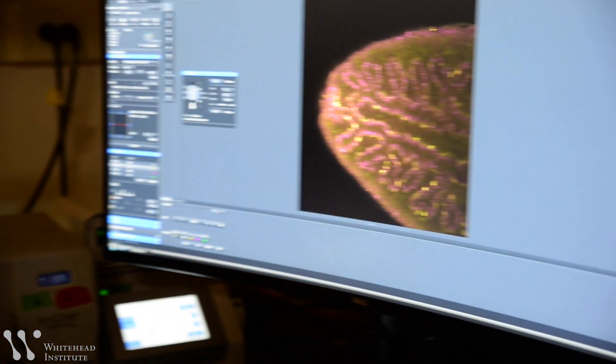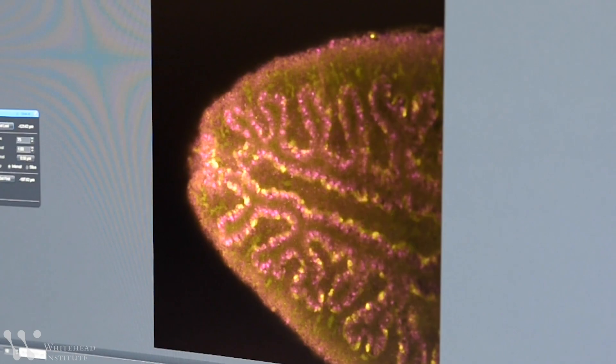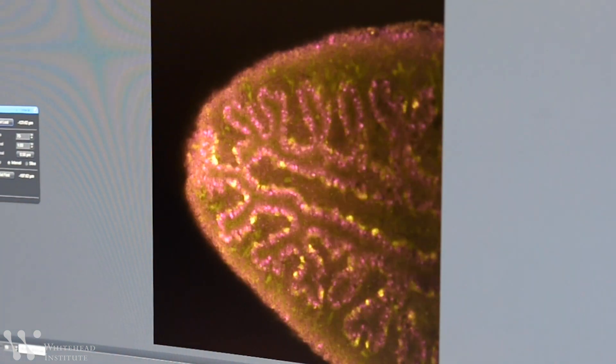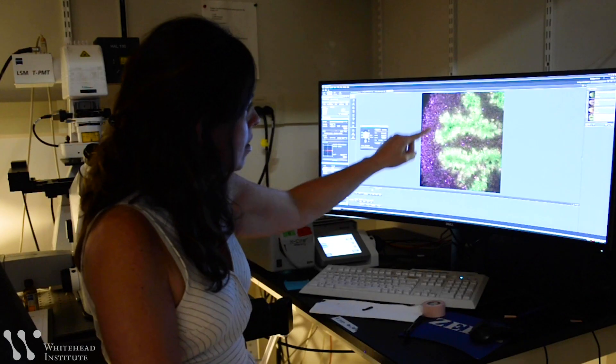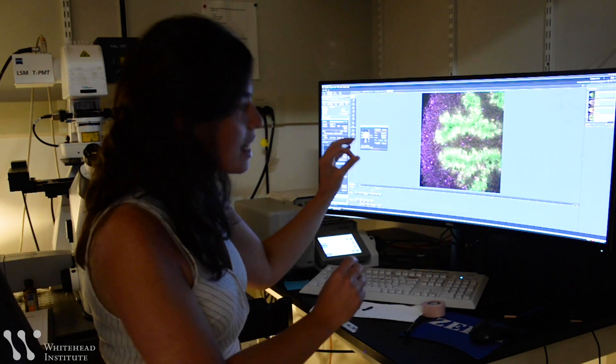Most neuronal circuits are wired during embryonic development. By exploring how regeneration works in other species and finding surprising roles for cell types like muscle, this research could help reveal a path forward for regenerative medicine in humans.